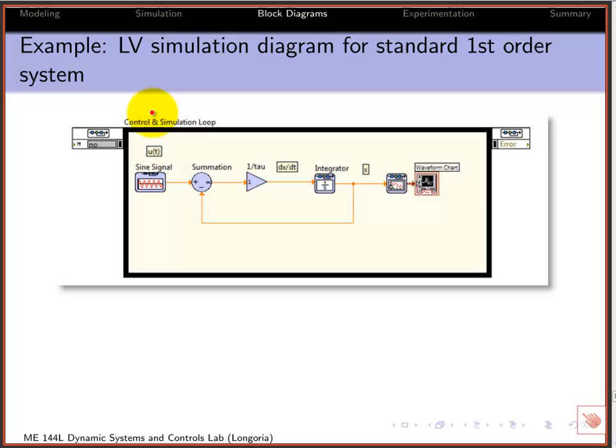So here, like, first order example that I showed in the previous slide, here's how that might look in the control and simulation loop, right? You have the integrator, remember, you have a 1 over tau coming in through a gain. Here's the gain block. You generate dx dt. I just put a little note there, and the output goes into X, and then you can plot that.